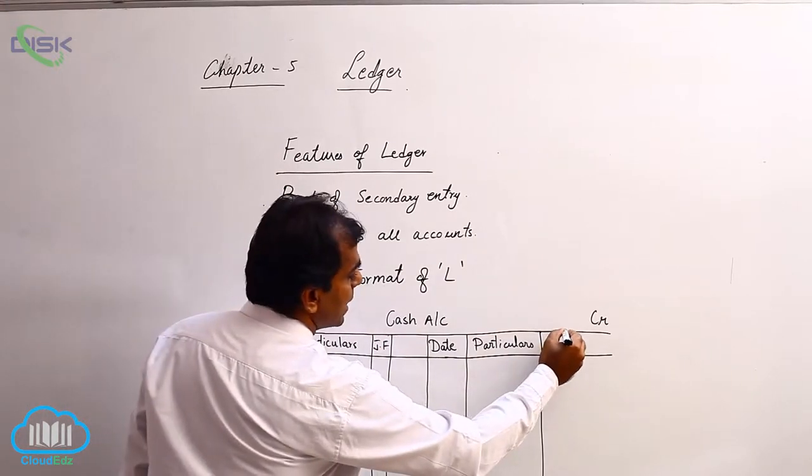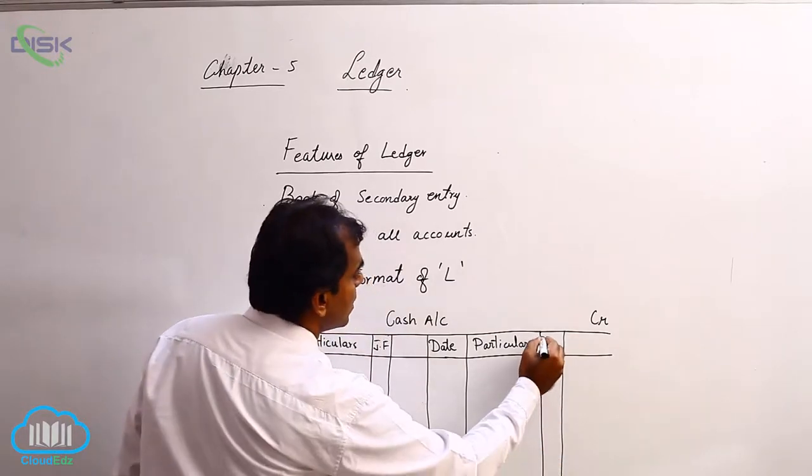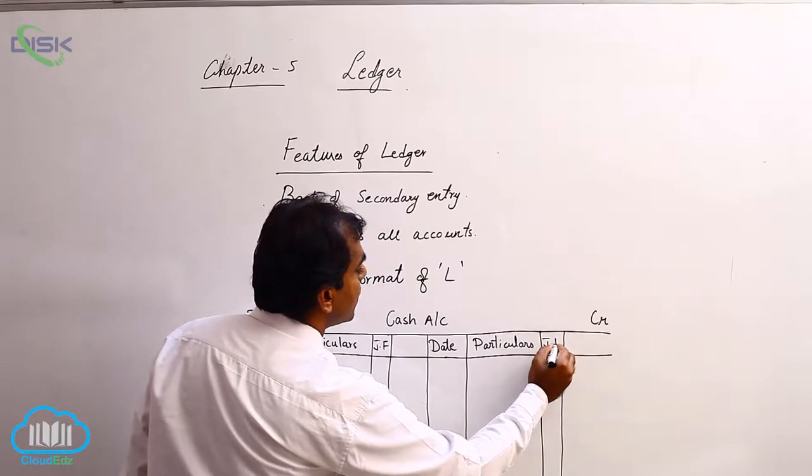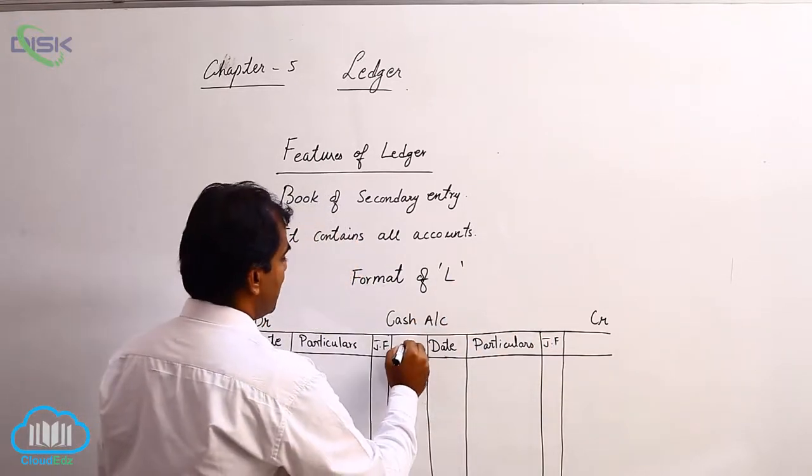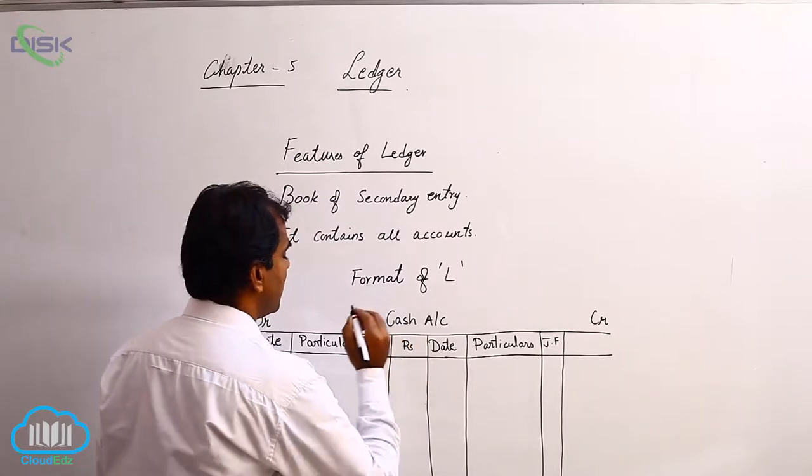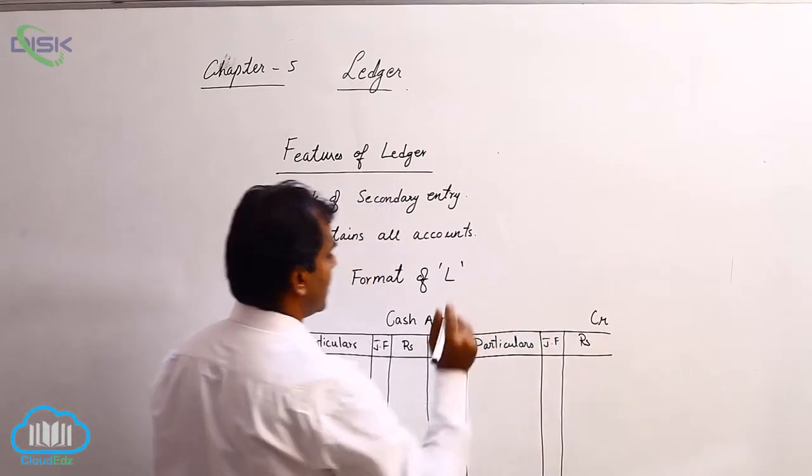On the other side also, we have the third column as journal folio. The last column is meant for amount, so it is the amount column.